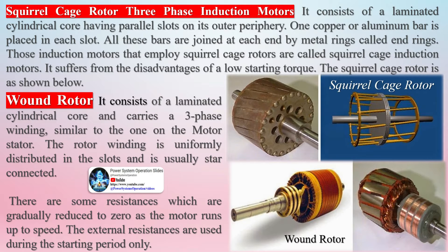There are two main types of rotors available in the induction motor: the squirrel cage rotor and the wound rotor. The squirrel cage rotor consists of a laminated cylindrical core having parallel slots on its outer periphery. One copper or aluminum bar is placed in each slot, and all these bars are joined at each end by metal rings called end rings. Induction motors that employ squirrel cage rotors are called squirrel cage induction motors. This type suffers from the disadvantage of low starting torque.